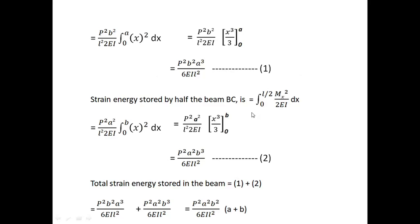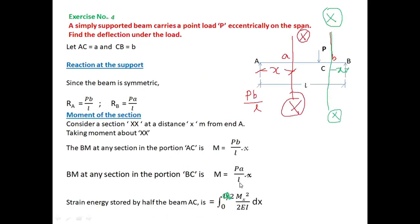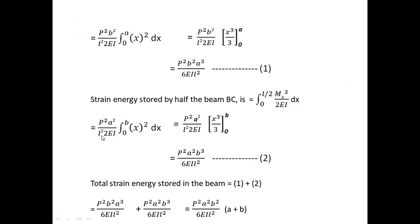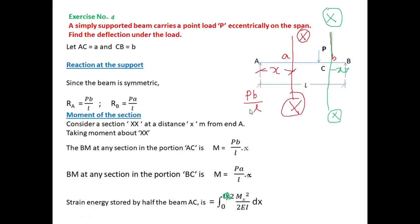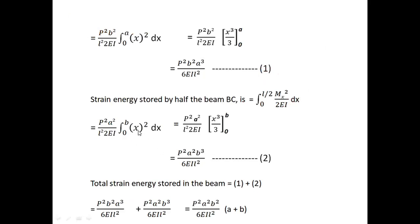Now for the BC portion strain energy: the moment is PA/L into x. So we have P²a²/2EIL² integrated with limit 0 to b. Integrating x squared gives x cubed by 3; applying the limit gives b cubed. So the strain energy for the BC portion is P²a²b³ divided by 6EIL².